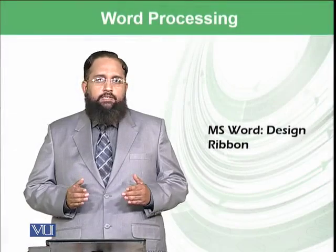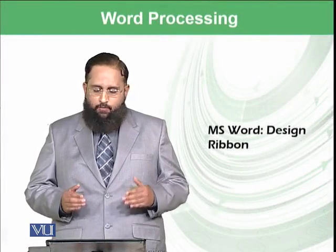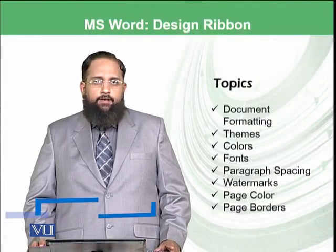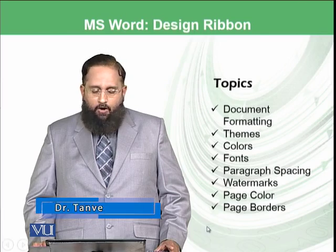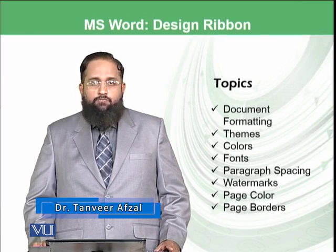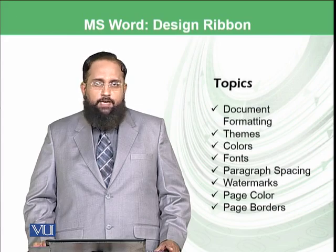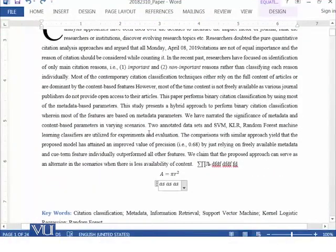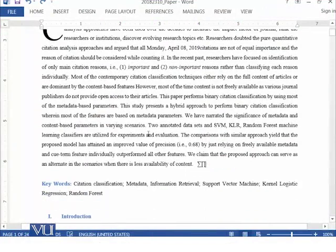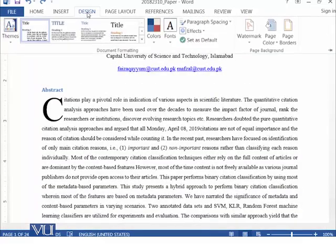Dear students, we were discussing Microsoft Word and today we will learn about the Design ribbon. In the Design ribbon we will be focusing on topics like document formatting, themes, colors, fonts, paragraph spacing, watermarks, page color, and page borders. Let's start the practical — here is the same document we were working on, so let's use Ctrl+Z to undo previous changes.